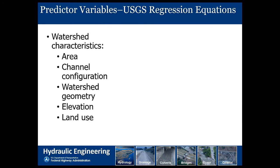When we're talking about USGS regression equations, these are the watershed characteristics we'll typically find in various equations. We'll be looking at the drainage area — that's pretty important. We'll look at channel configuration, watershed geometry — is the watershed wide and squat, or long and narrow? It might have elevation in there. When would you need to be aware of your elevation? Well, what happens at high elevations, like in Colorado? You get a lot of snow. USGS equations take the elevation into account, so if you're over some particular elevation, you use a different equation.